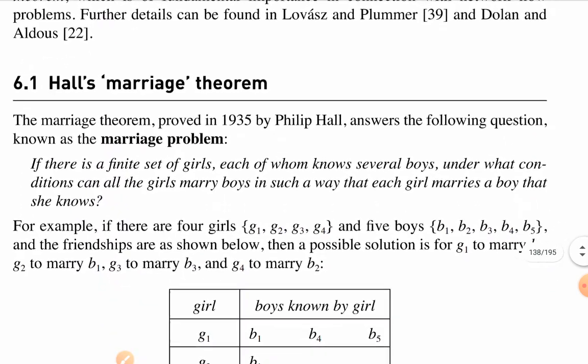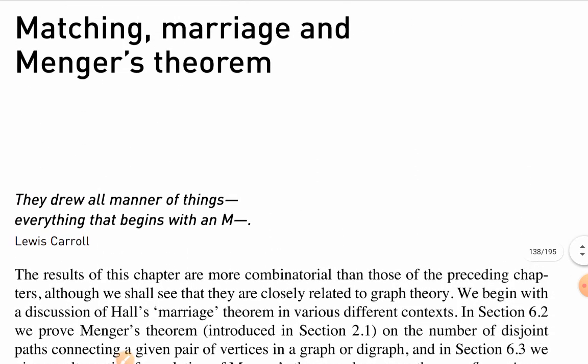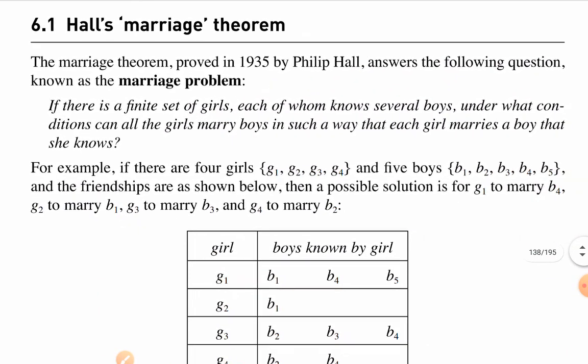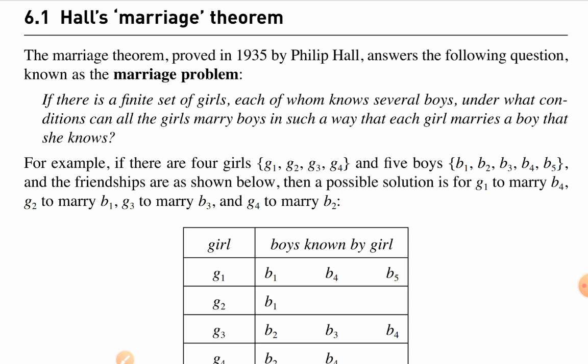Today our topic is Hall's Marriage Theorem. You can find it in the reference book by Wilson, page 128. Hall's Marriage Theorem was proved in 1935 by Philip Hall and it solves the marriage problem: if there is a finite set of girls, each of whom knows several boys, under what conditions can all the girls marry boys in such a way that each girl marries a boy that she knows?